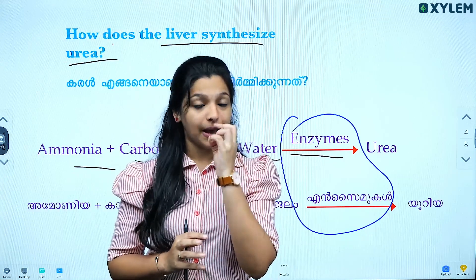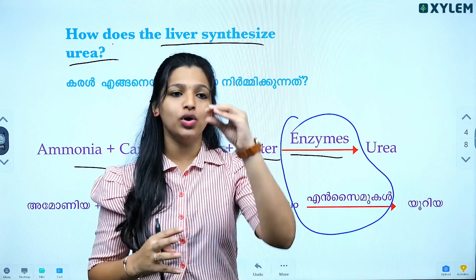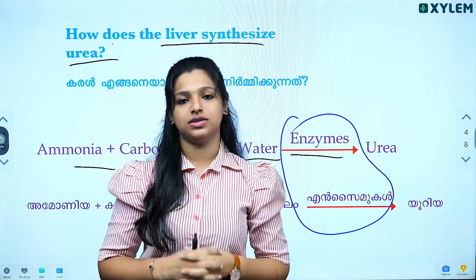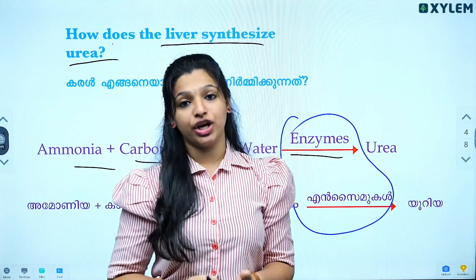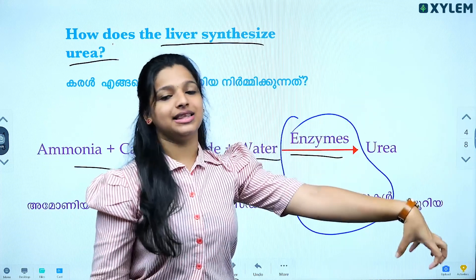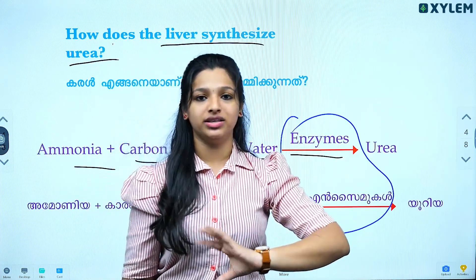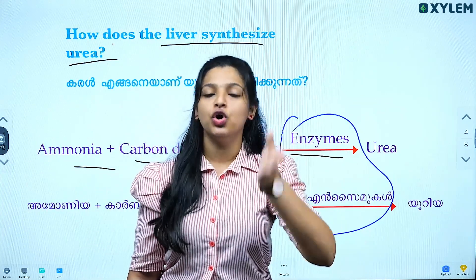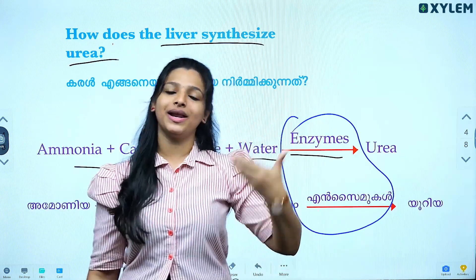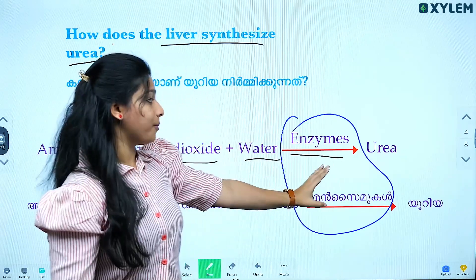This is the process of converting high toxicity ammonia into less toxic urea. This is what happens in the human body.